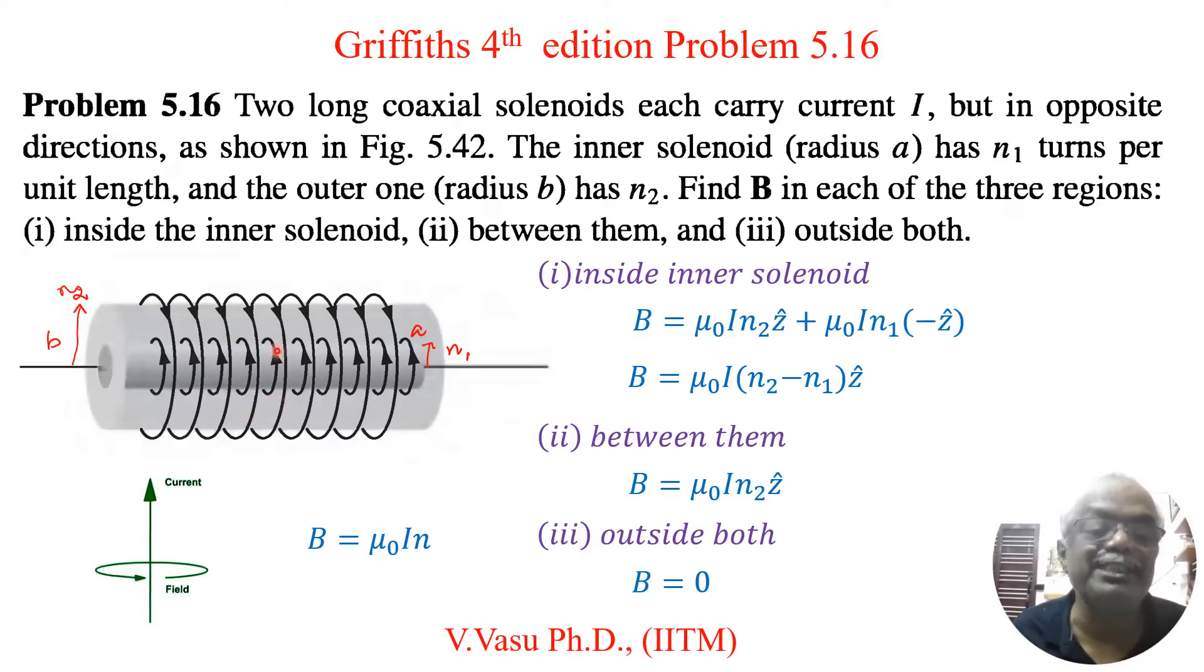For inner solenoid you can see the direction of the current is upwards. So the magnetic field is counter-clockwise direction like this. So it will flow like this.